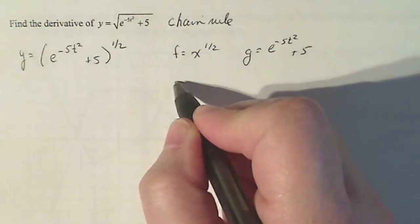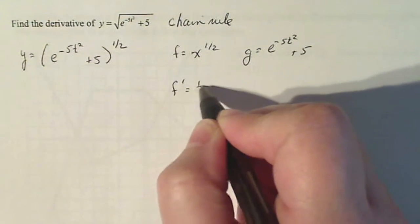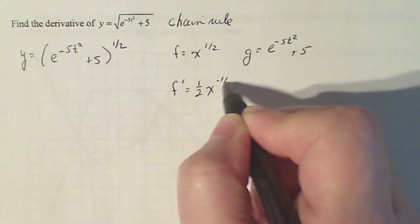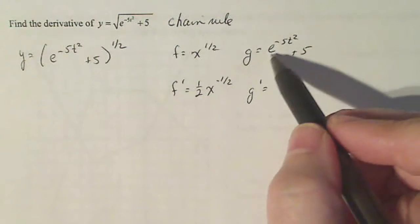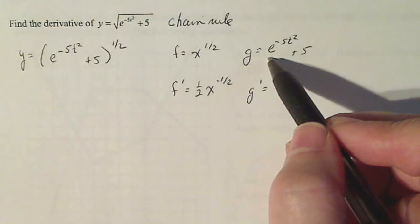And I just take the derivative of each of them. f prime equals one half x to the minus one half using the power rule and g prime. Well, if I look at this function, that's also a composition of functions.